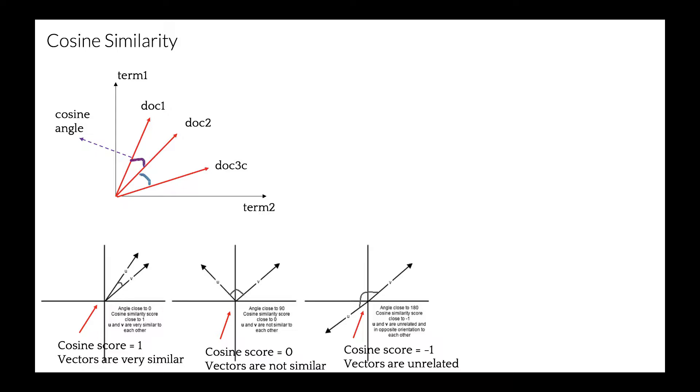And finally, if the angle is close to 180, cosine score is close to minus one, and vectors are unrelated. Cosine similarity formula is a dot product of two vectors in the numerator, and the product of the Euclidean length of the two vectors as a denominator.